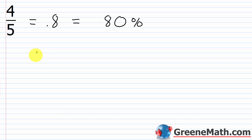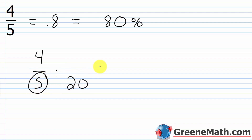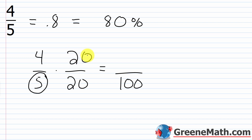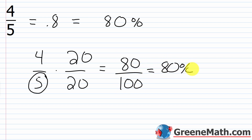The quicker way: take four-fifths and realize that if I multiply 5 times 20, I get 100. If you didn't know that, take 100 divided by 5 to get 20. So I need to multiply by 20 over 20. The denominator becomes 100, and I multiply the numerator by 20 as well — 4 times 20 is 80. Now I have a fraction whose denominator is 100, so I just take the numerator, 80, and follow it with a percentage symbol. We get the same answer either way: 80%.